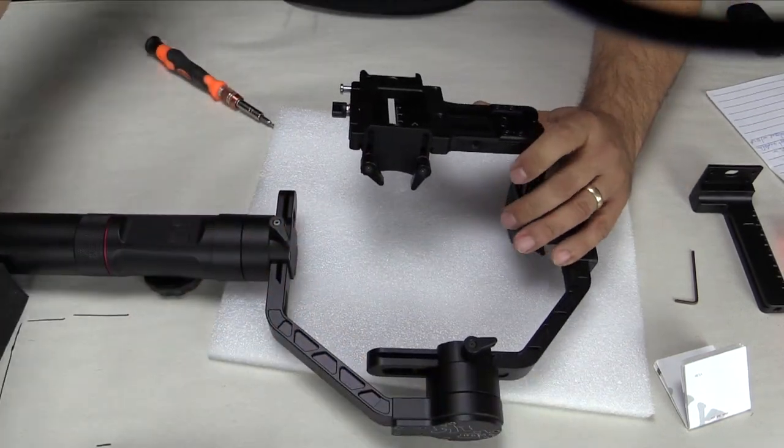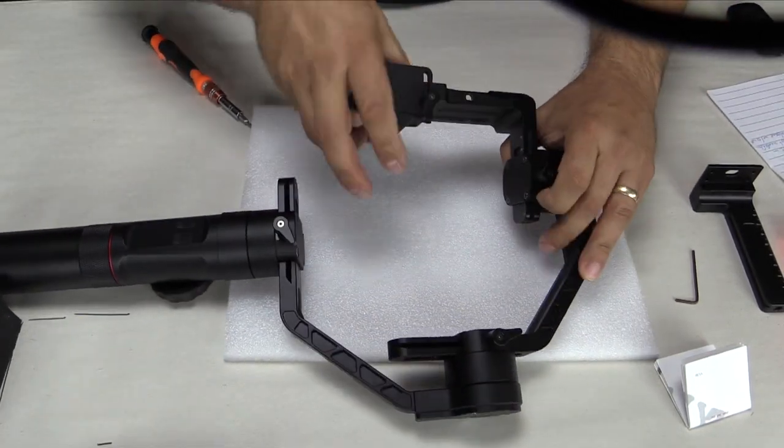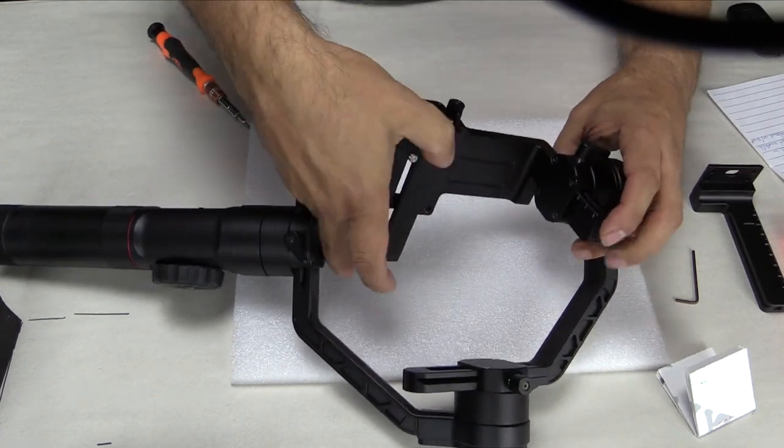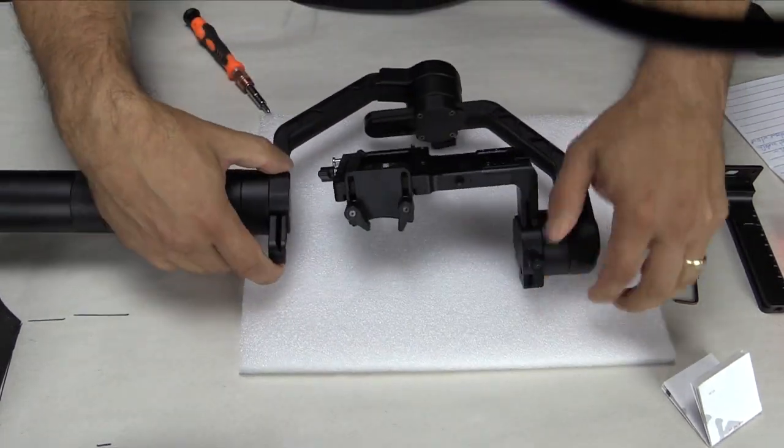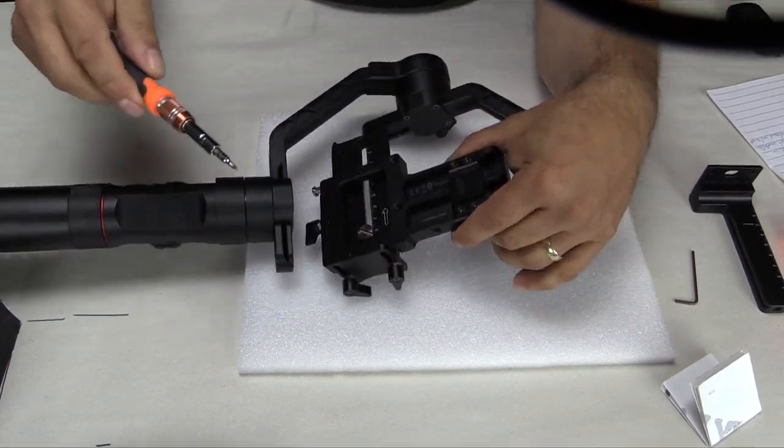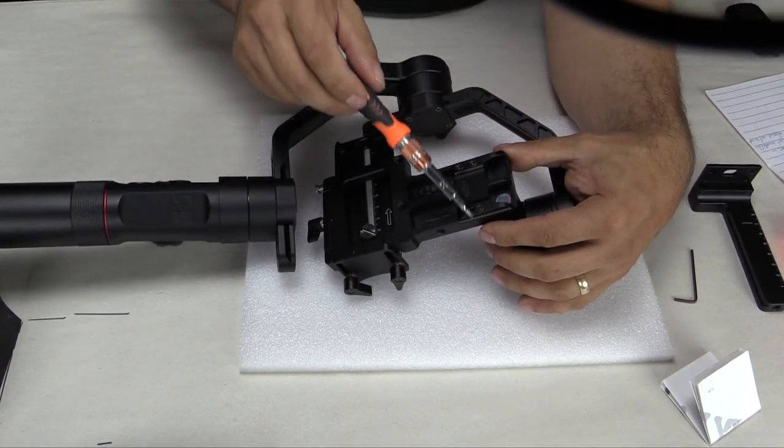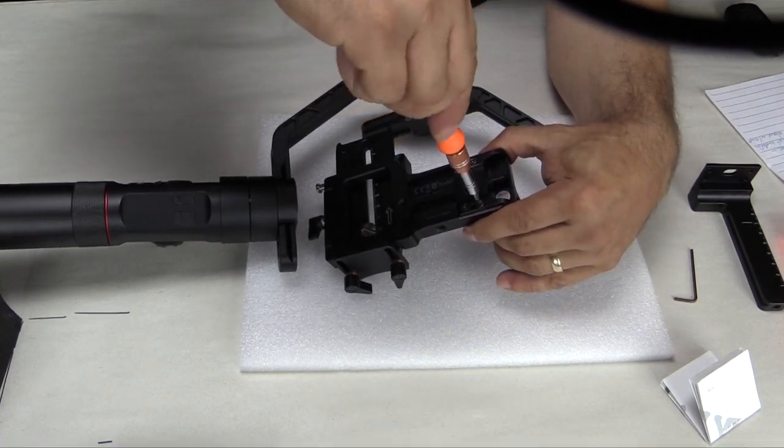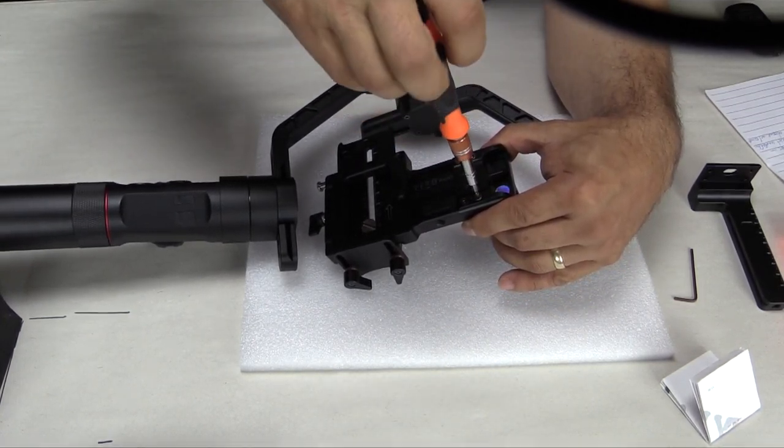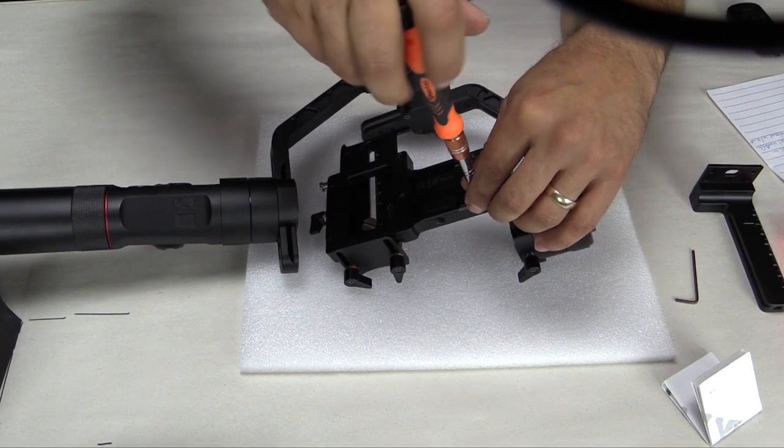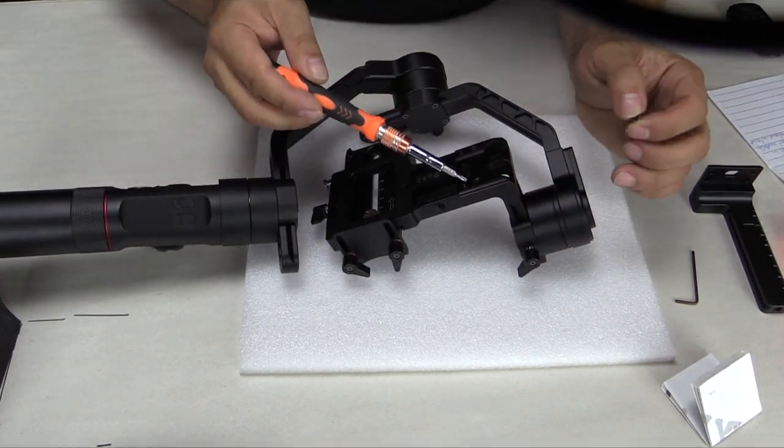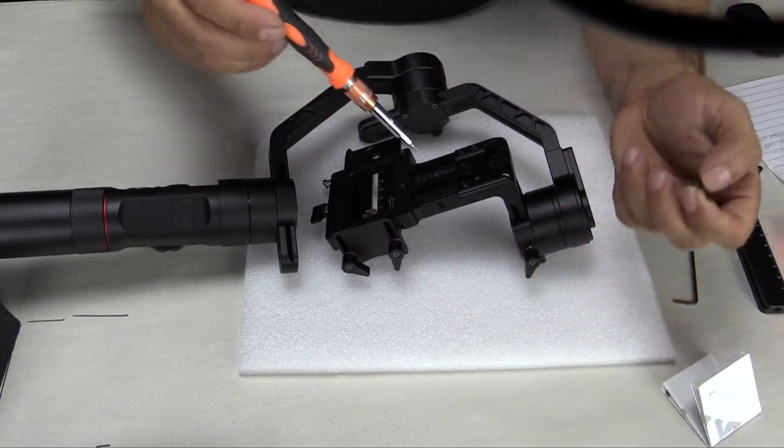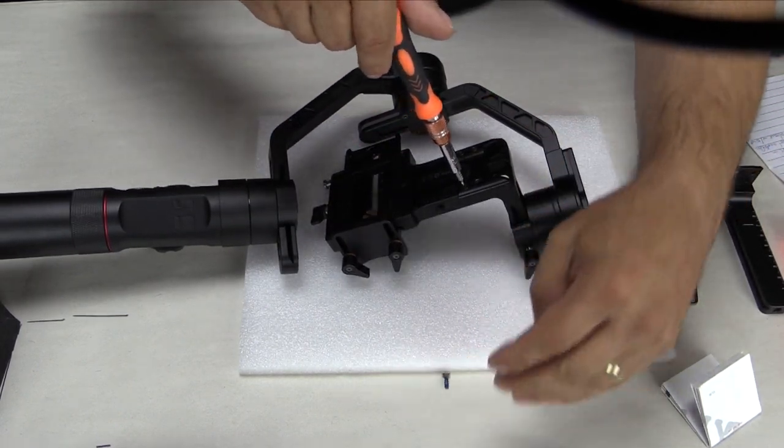Let's take the unit, and let's kind of flip it here. And we're going to unscrew these four screws here. These screws will happen to be slightly shorter than the ones that are going to come out from the second section.